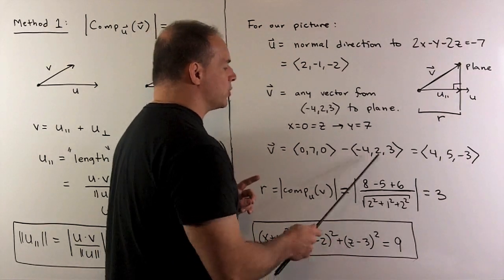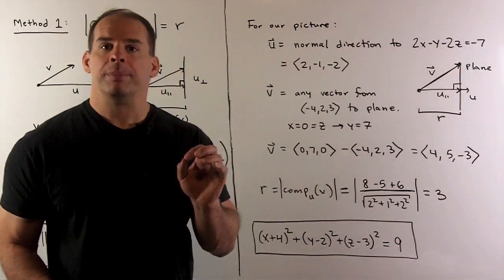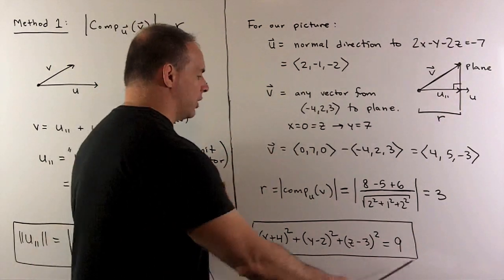We don't need to take the absolute value because we have a positive number, which is 3. So my radius is 3. Then I can put our radius into our equation to get the equation of our sphere.